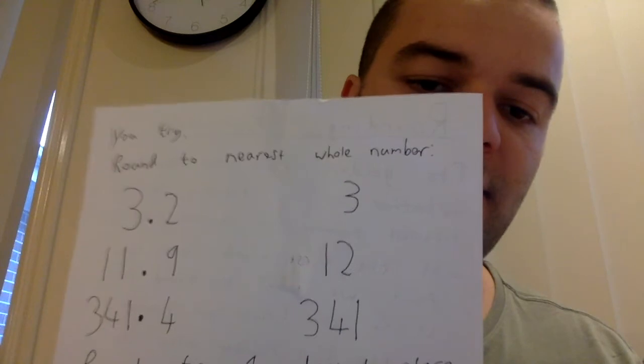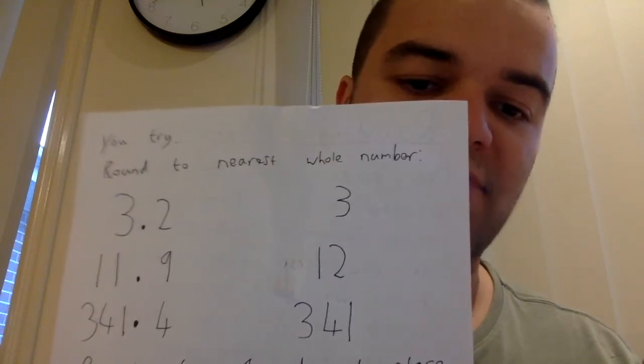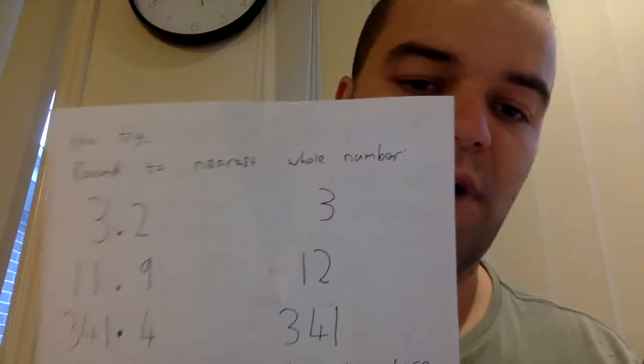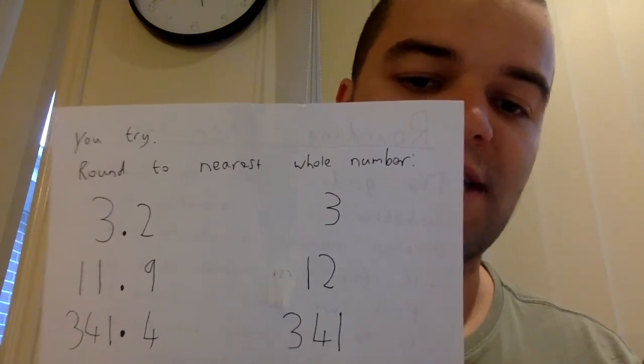So the first and third ones have numbers that are 4 or lower, so we've rounded them down. The middle one has a number that's 5 or higher, so it's rounded up.